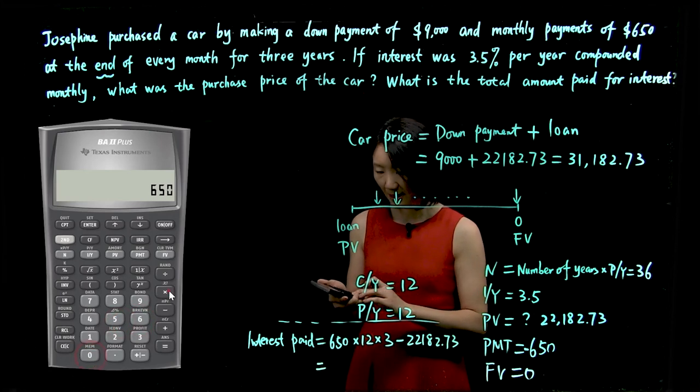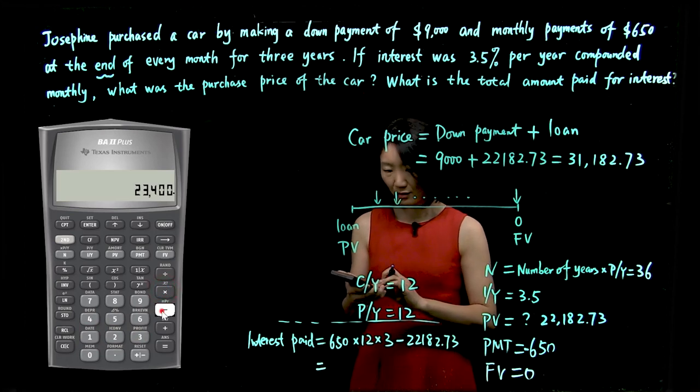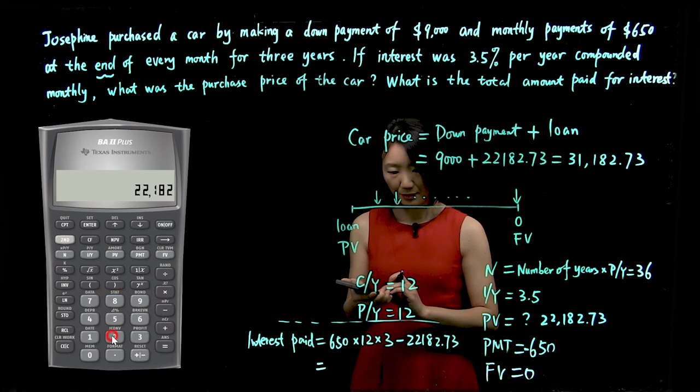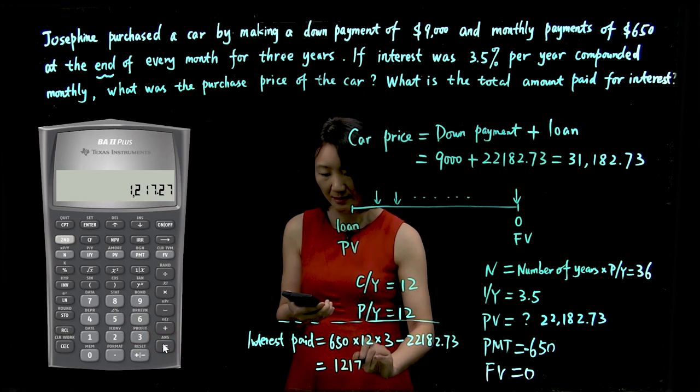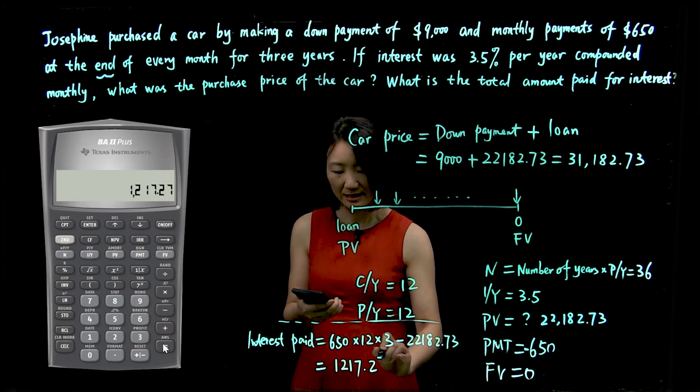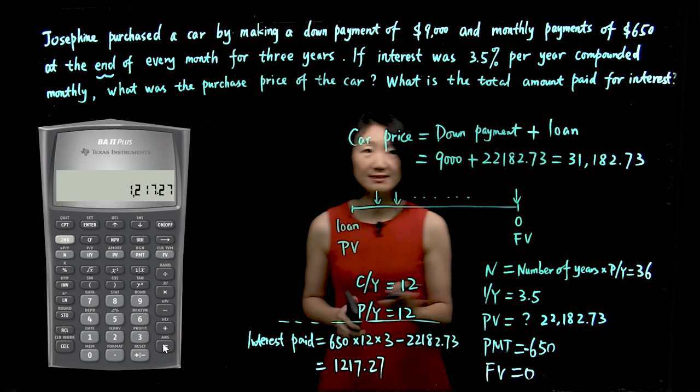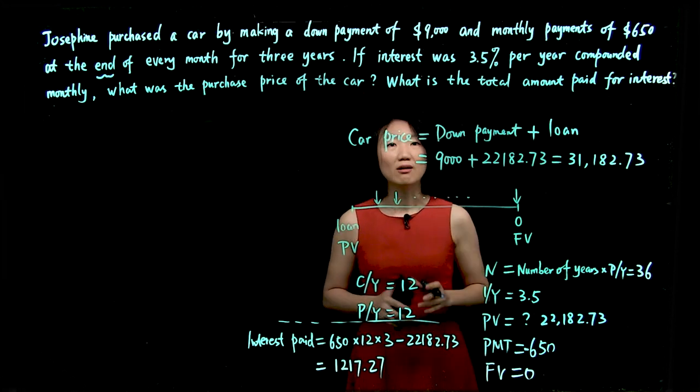$650 times 12 times 3, subtract $22,182.73. So it's $1,217.27. And that is the interest paid for that loan.